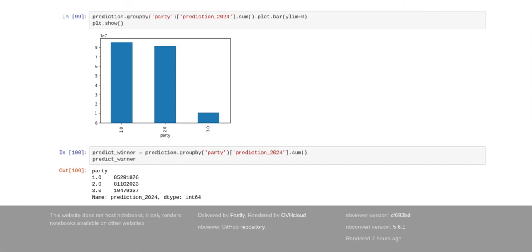This is our predicted winner: Random Forest thinks there will be more votes on the Democratic side than the Republican side in 2024. But again, it's determined by the Electoral College — if we won just on the number of votes, the Democrats would win, but since the Electoral College determines who wins, that's the basis of another machine learning program.